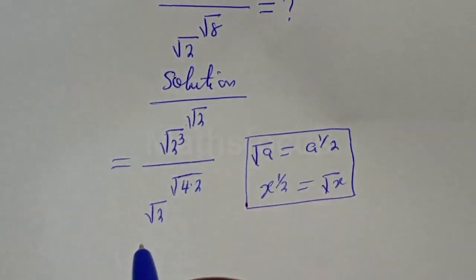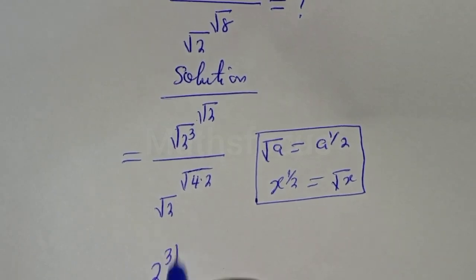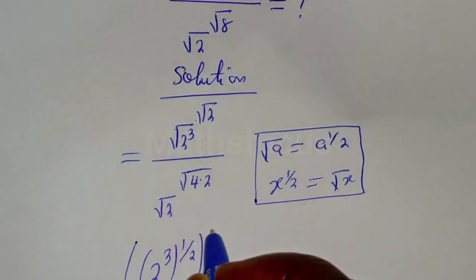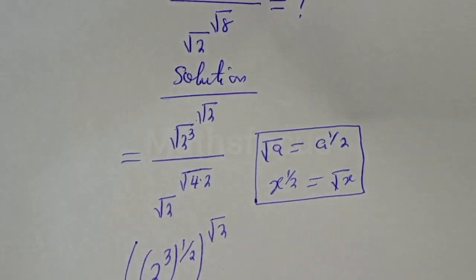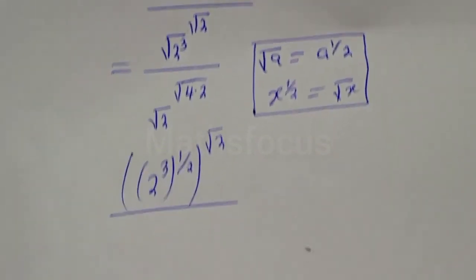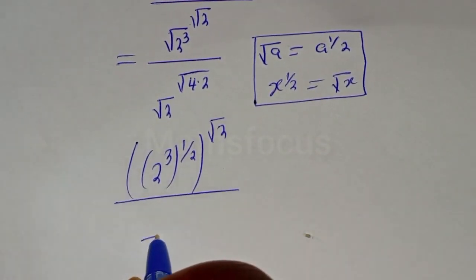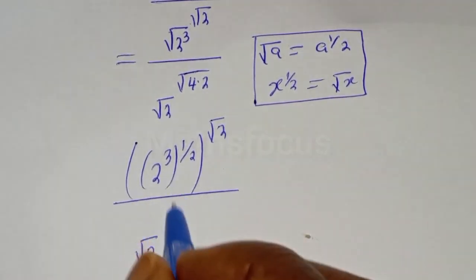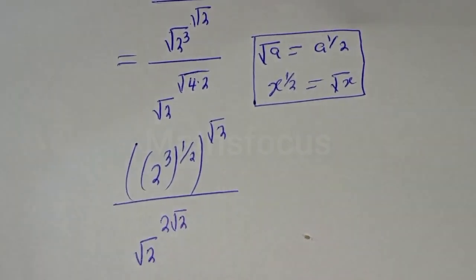Then this can be written as 2 raised to power 3, to the power of 1 over 2, to the power of square root of 2, divided by square root of 2 to the power of 2 square root of 2.